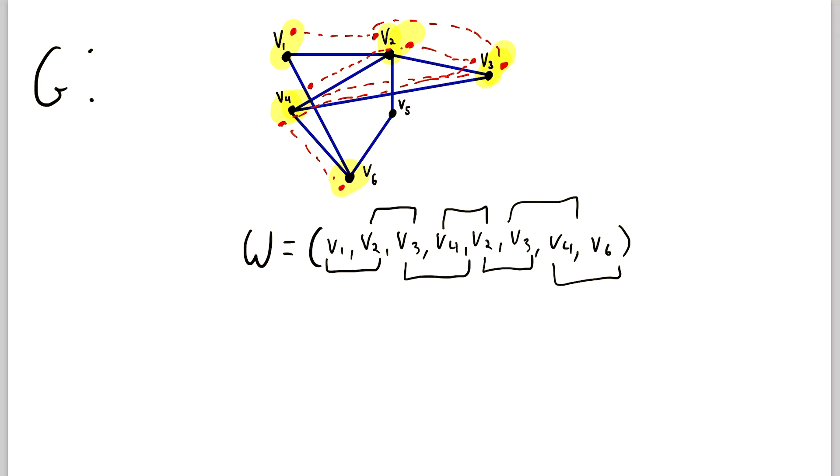But besides that, there are really no restrictions. Like you saw, we can visit the same vertex multiple times, which we did. And of course, you can also traverse the same edges multiple times, which we also did. Of course, there are special names for walks that do follow additional restrictions, but we're not talking about those in this lesson.